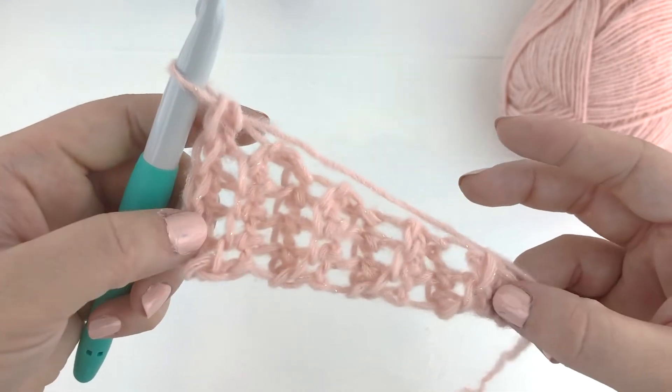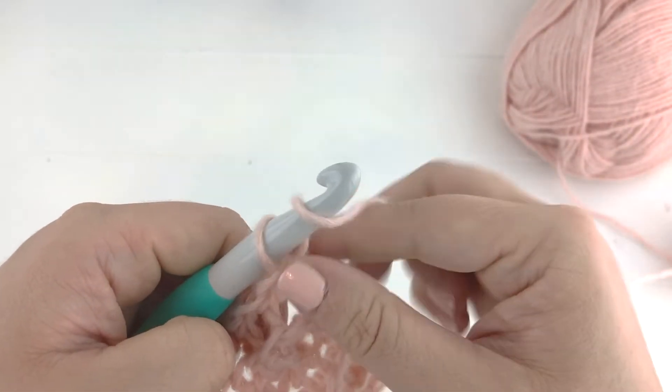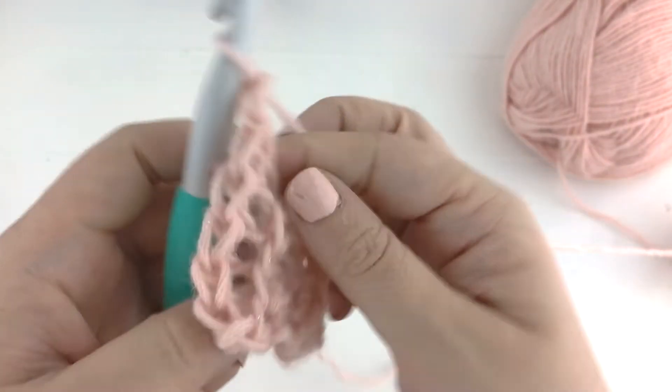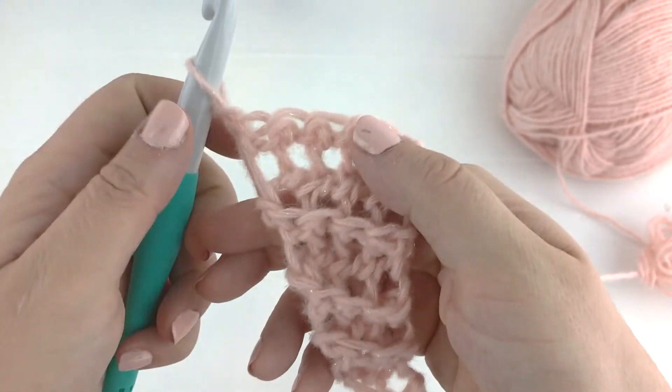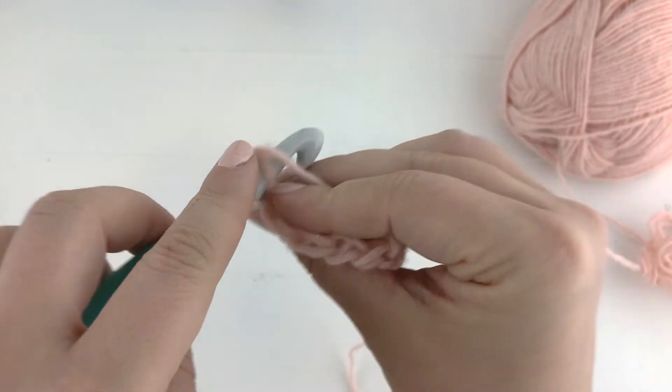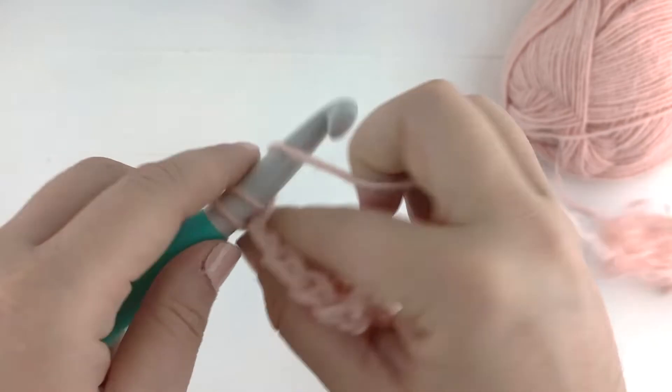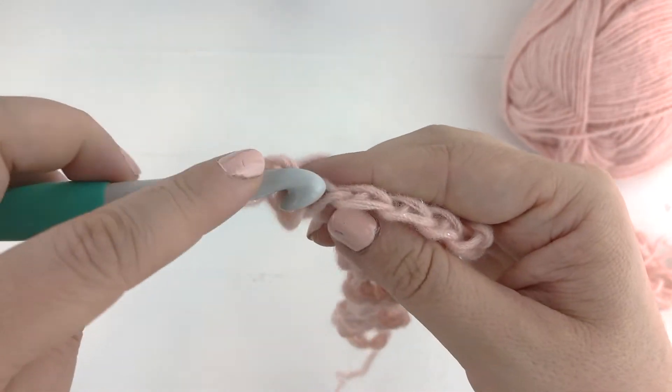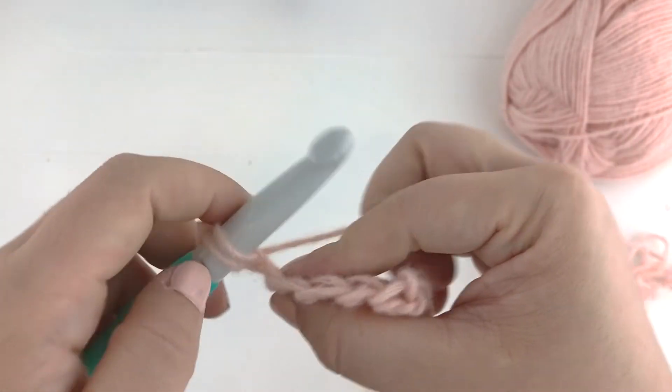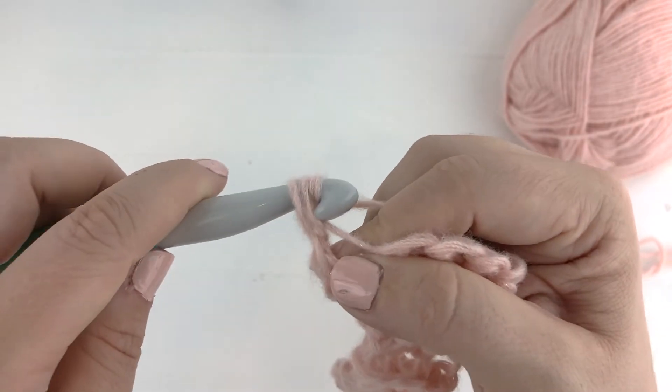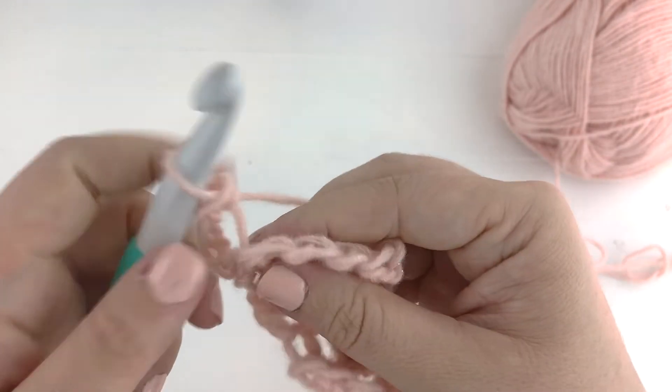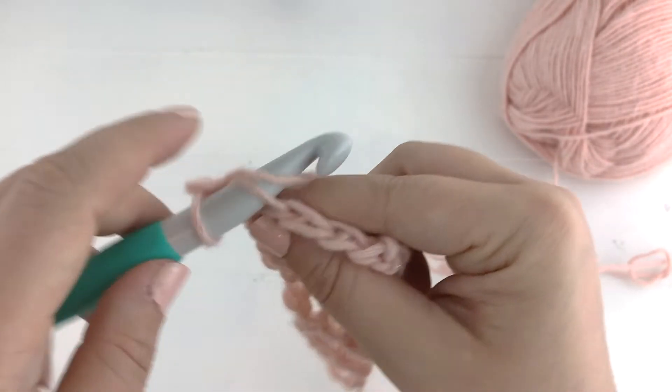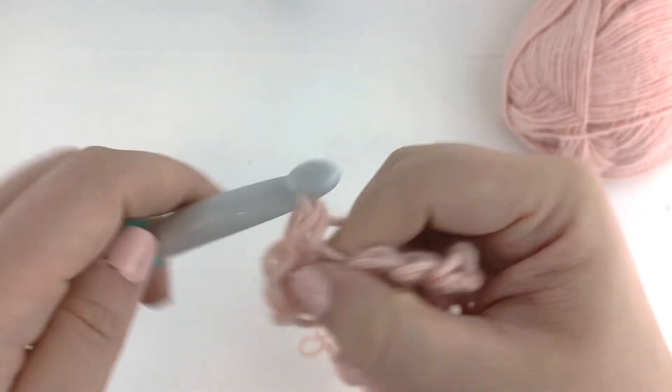Now you can see the top side is our slanted side, our angled side. We're going to chain one and turn for row nine. Since it's on that angled side we're going to increase in the first stitch, working a second single crochet into that first stitch, and then single crochet in the back loops only of every stitch across.